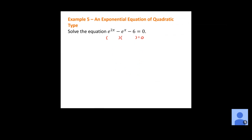To get e to the 2x, I take e to the x times e to the x, since multiplying adds exponents. Looking at the factors of 6, I want a negative e to the x in the middle, meaning a coefficient of negative 1. The factors I want are 3 and 2. Because I need a negative 6, the signs need to be opposites, with the bigger value negative to give me that negative e to the x. So it factors as minus 3 and plus 2.